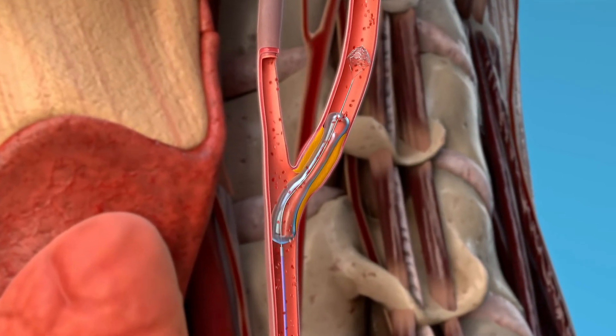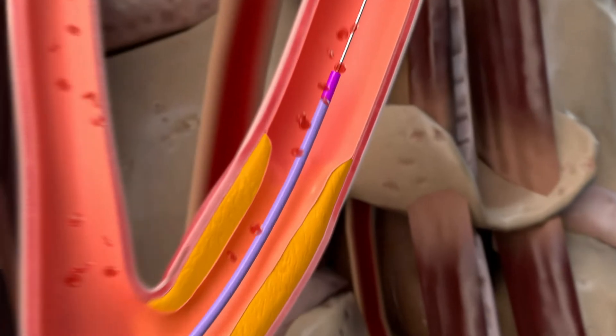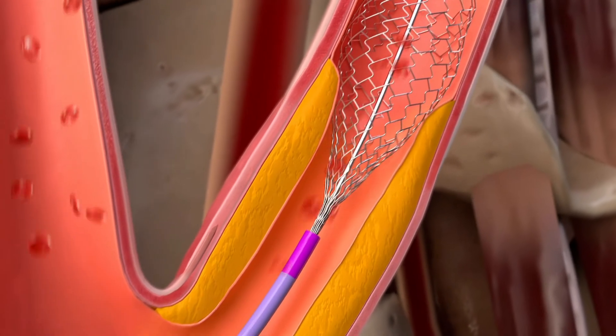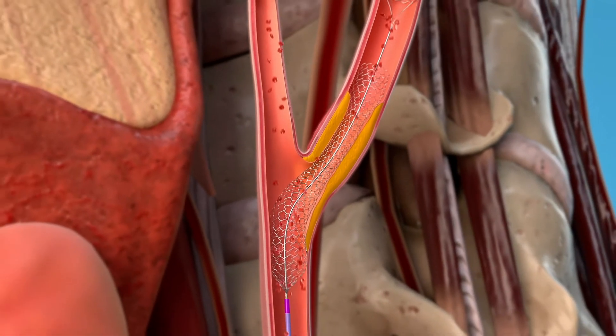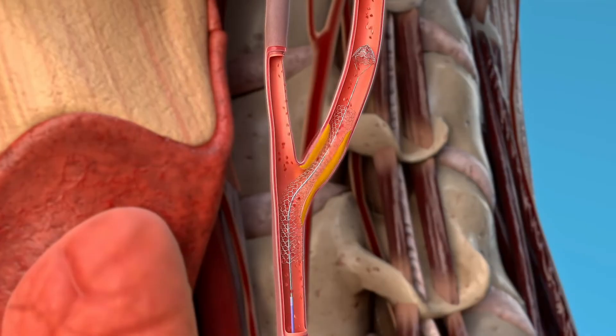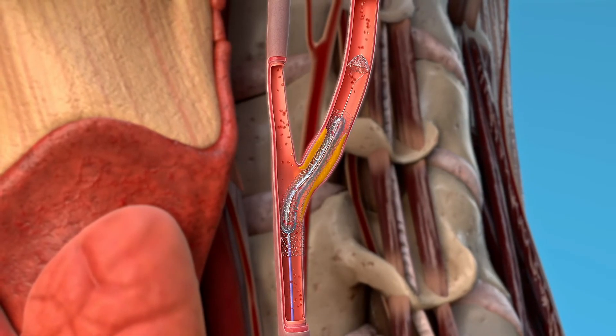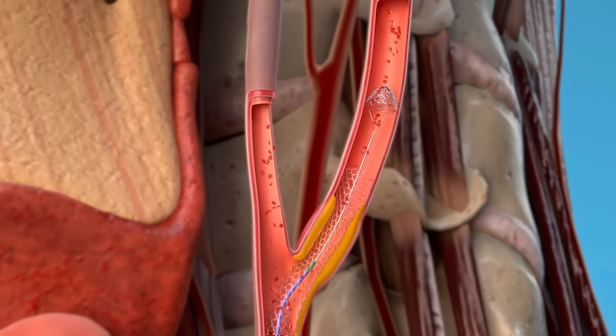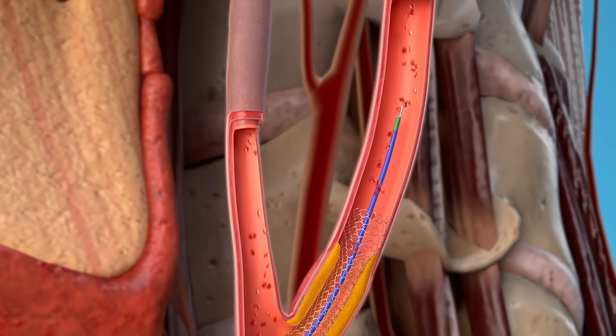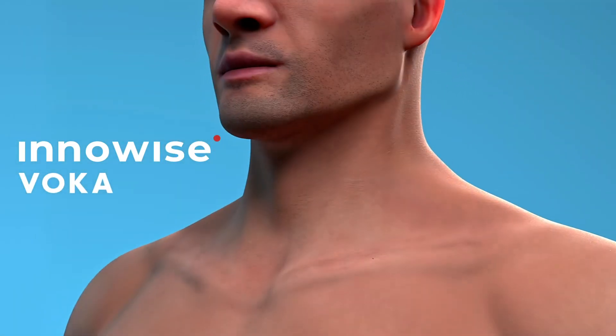Next step, balloon predilation. A stent is placed in the affected area. In some cases, balloon post-dilation is performed. As a result, stenting restores good patency of the internal carotid artery.